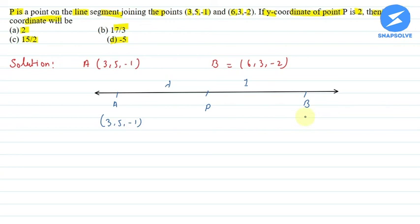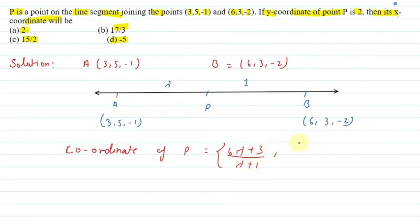Point A is (3,5,-1) and point B is (6,3,-2). The coordinates of P using section formula: x-coordinate is (6λ+3)/(λ+1), y-coordinate is (3λ+5)/(λ+1), and z-coordinate is (-2λ-1)/(λ+1).